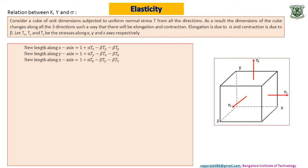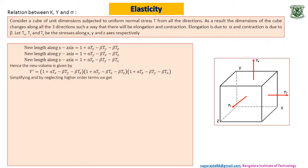So we have three new values. As a result the volume will be v' equals new length along x axis into y axis into z axis. I request you to simplify this and neglect higher order terms. That means wherever you get alpha into alpha or alpha into beta or beta into beta you just neglect it. By neglecting higher order terms we get v' equals 1 plus alpha into (Tx + Ty + Tz) minus 2 beta into (Tx + Ty + Tz). I request my students to do this simplification just for better understanding of the derivation.